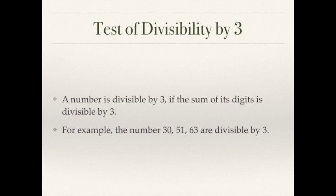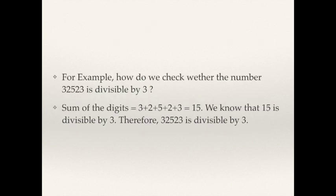There are some more examples. Take 32,523 — is it divisible by 3? Take the sum of all the digits: 3 plus 2 plus 5 plus 2 plus 3 equals 15. Since 15 is divisible by 3, we can say that 32,523 is also divisible by 3.